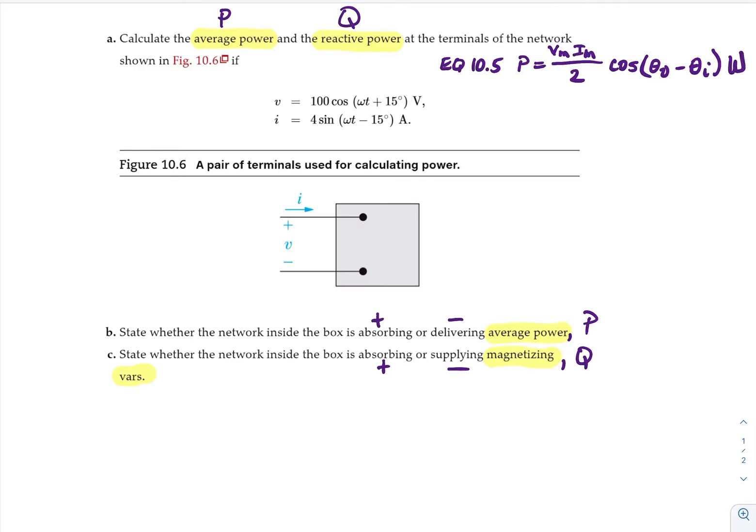And we'll be using equation 10.6, which is reactive power Q equals V sub M times I sub M, divided by 2, times sine of the phase voltage minus the phase of current, and that is vars.